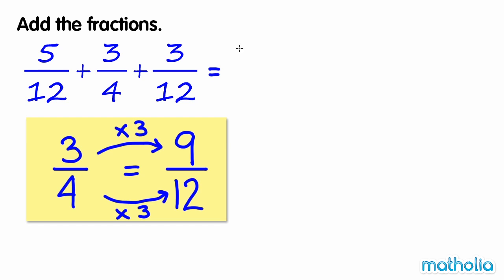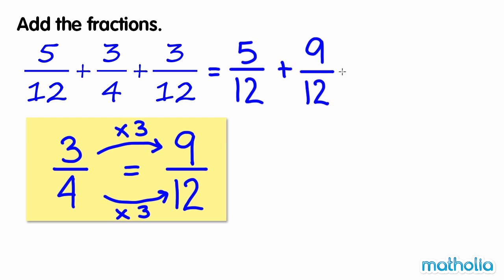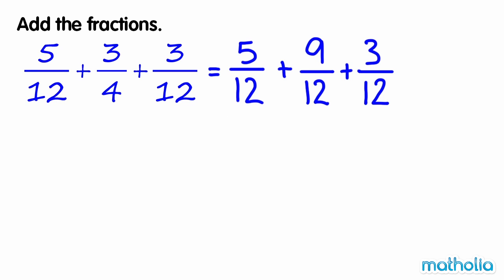So 5 12ths plus 3 quarters plus 3 12ths is equal to 5 12ths plus 9 12ths plus 3 12ths. The fractions are now like fractions, so we can add the numerators. 5 plus 9 plus 3 equals 17. So 5 12ths plus 9 12ths plus 3 12ths equals 17 12ths.